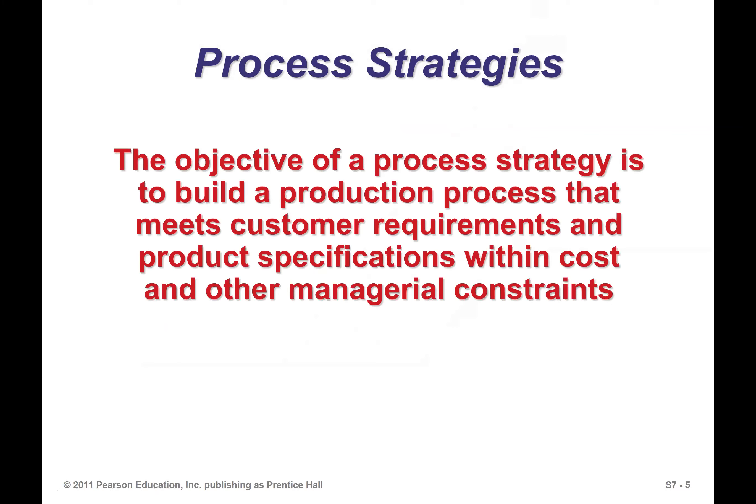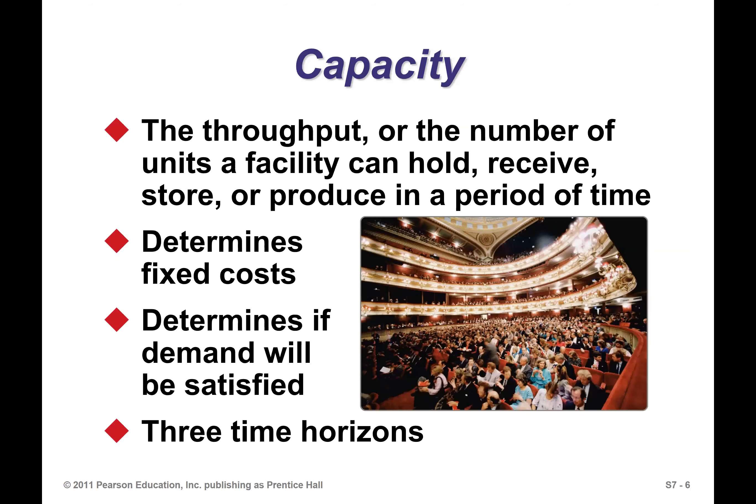Process strategy: the objective of a process strategy is to build a production process that meets the customer requirements and product specifications, but not just meet those — it must also be within cost and other managerial constraints. You don't have an open checkbook to just run up your costs. The throughput or number of units a facility can hold, receive, store, or produce in a period of time — that's the definition of capacity.